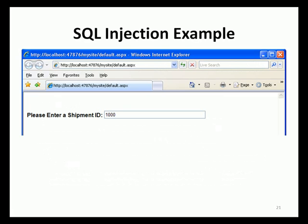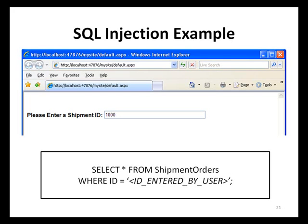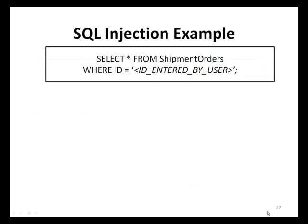Consider a simple web application where a user enters a shipping ID to track an online order. The user enters their tracking ID, and behind the scenes a SQL query retrieves the appropriate shipping data. Let's look at different input scenarios, the resulting queries executed by the database engine, and how failing to validate input can lead to exploitable conditions.